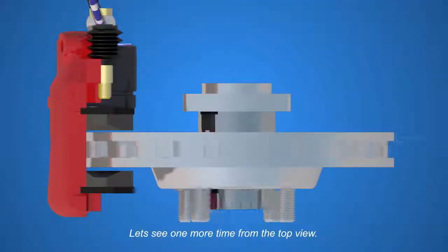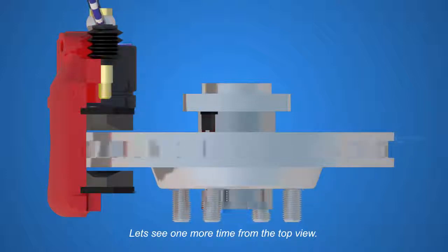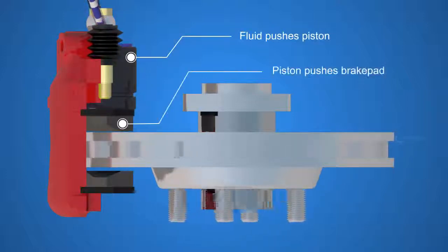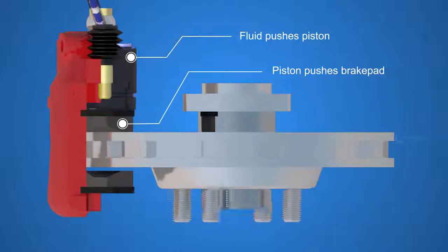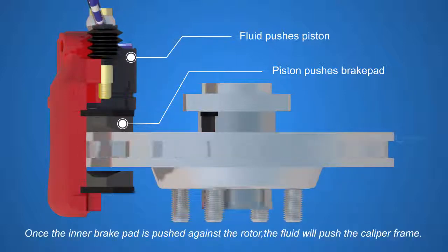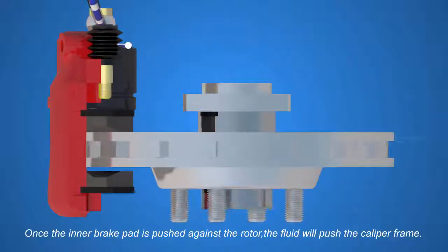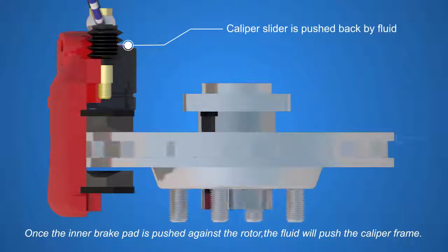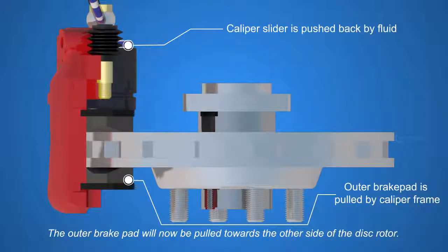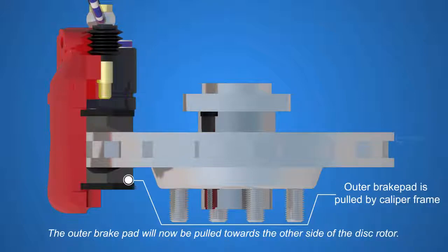Let's see one more time from the top view. The fluid pushes the piston, and the piston pushes the inner brake pad. Once the inner brake pad is pushed against the rotor, the fluid will push the caliper frame. The outer brake pad will now be pulled towards the other side of the disc rotor.